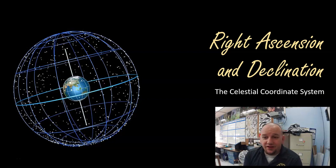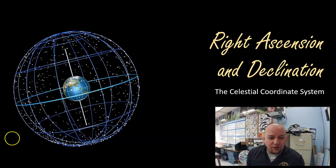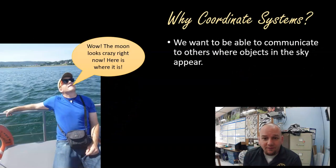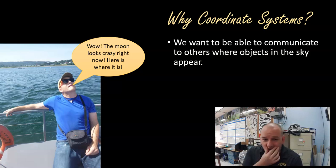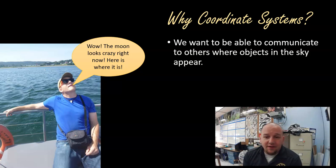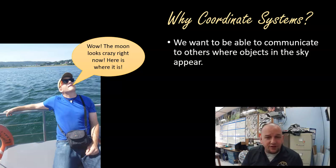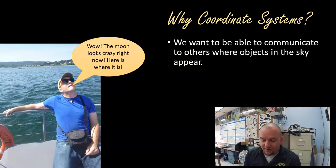Welcome to a discussion of the right ascension and declination system used in astronomy. The point of having a coordinate system is so that when we're talking to our friends, we can tell them where the objects we're seeing are. Looking up at the moon or some cool star, we want to be able to call a friend or turn to someone nearby and say this is where this object is. That's why we have coordinate systems — so we can communicate the location of objects in the sky.